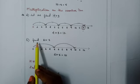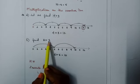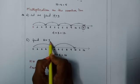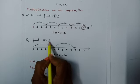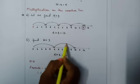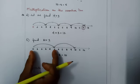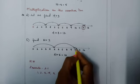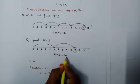Consider one more example to find the product of 2 and 5. I fix my step size at 5 steps and jump 2 times. I fixed my legs for 5 steps and jumped 2 times. So my answer is 10. That is 2 times 5 equals 10.